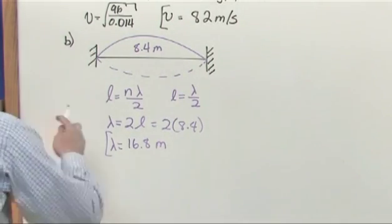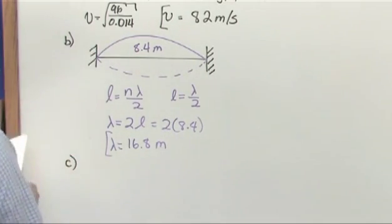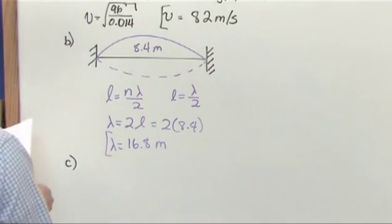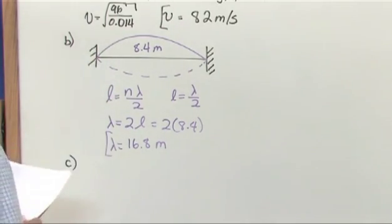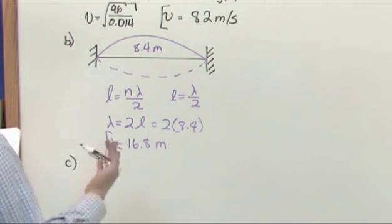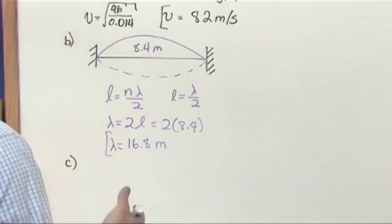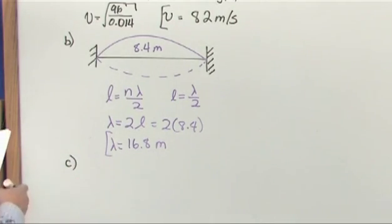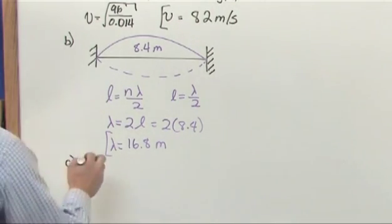Part C says: what is the frequency of the wave in part B? So in other words, for the first mode here, what is the frequency that comes about? Now you could use the formula for the frequency that we derived and just put in n equals 1, but we could also do it differently.